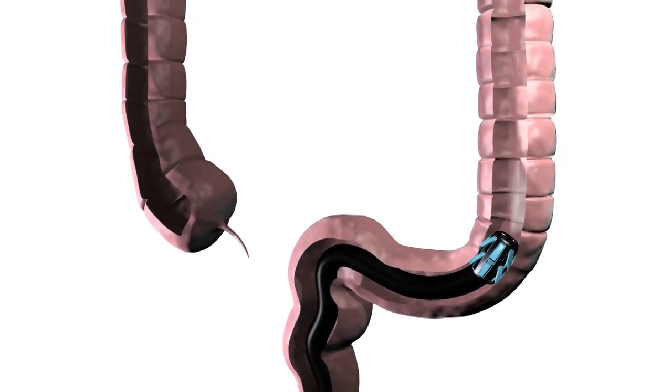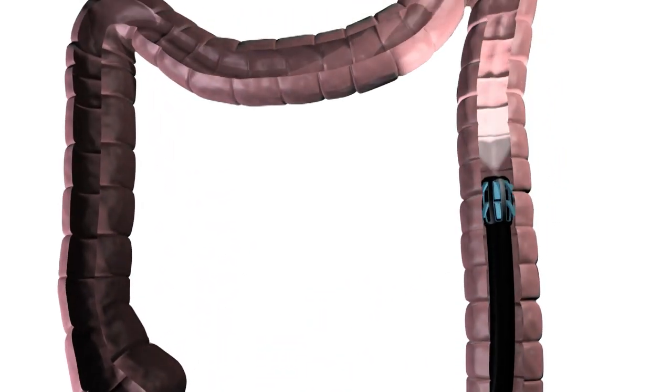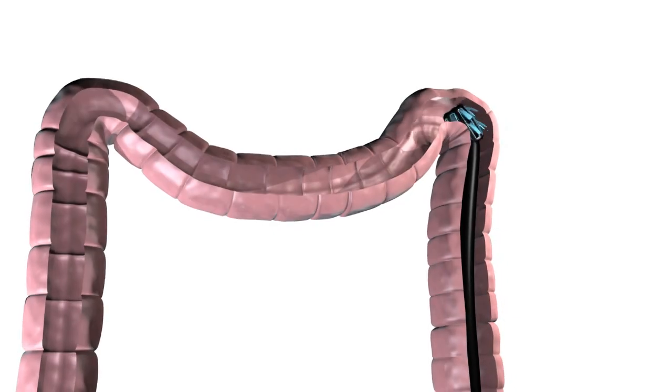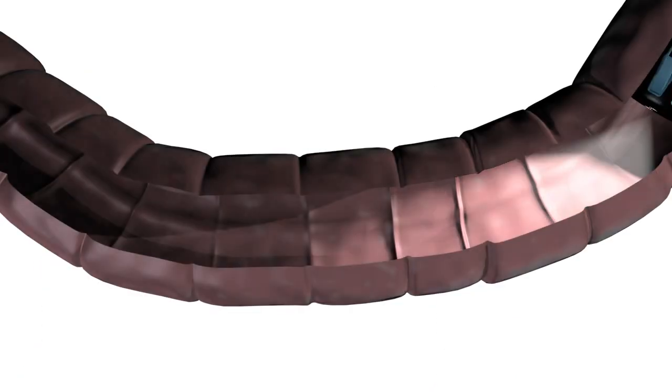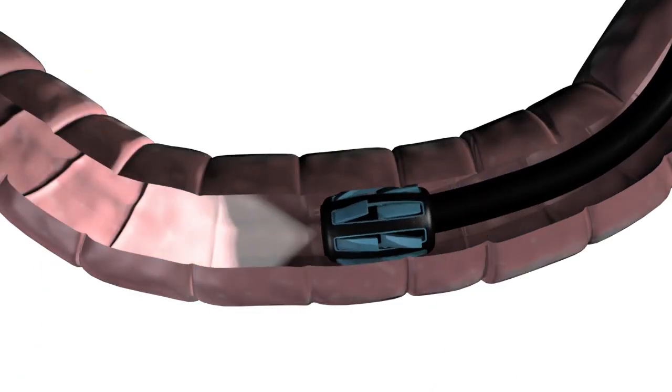As the tip of the colonoscope is inserted through the anus, these soft arms move independently and do not hinder forward motion through the colon.